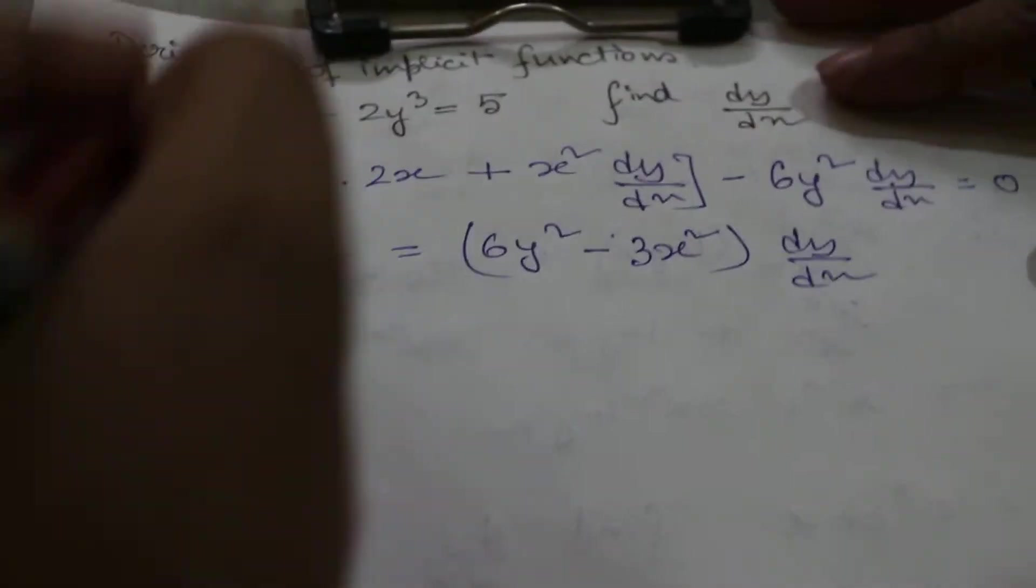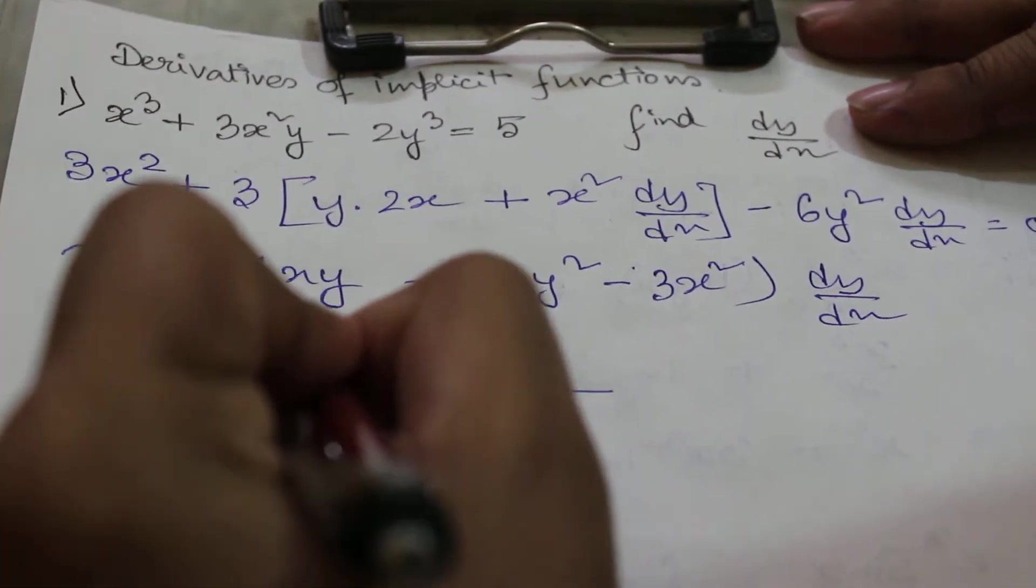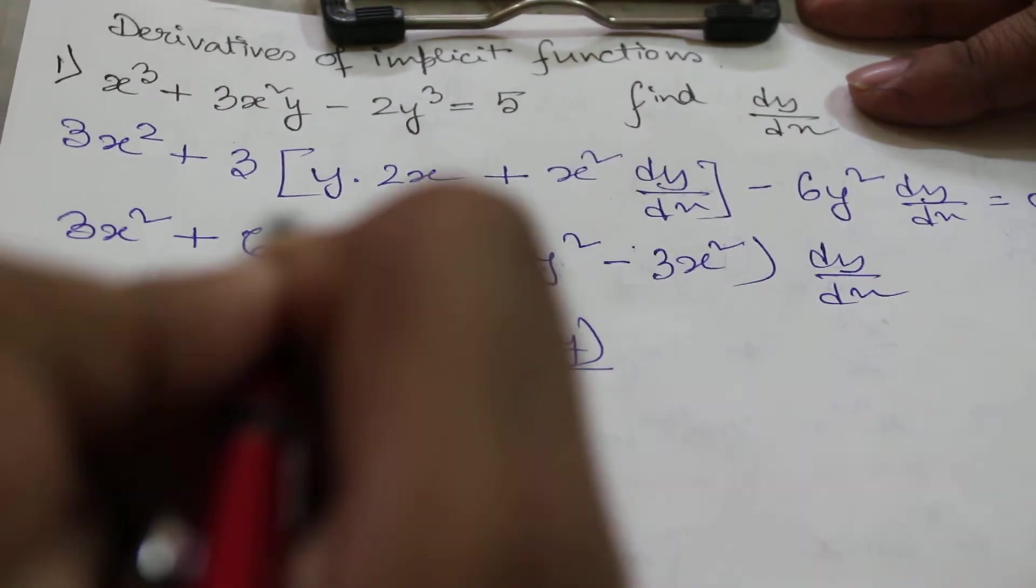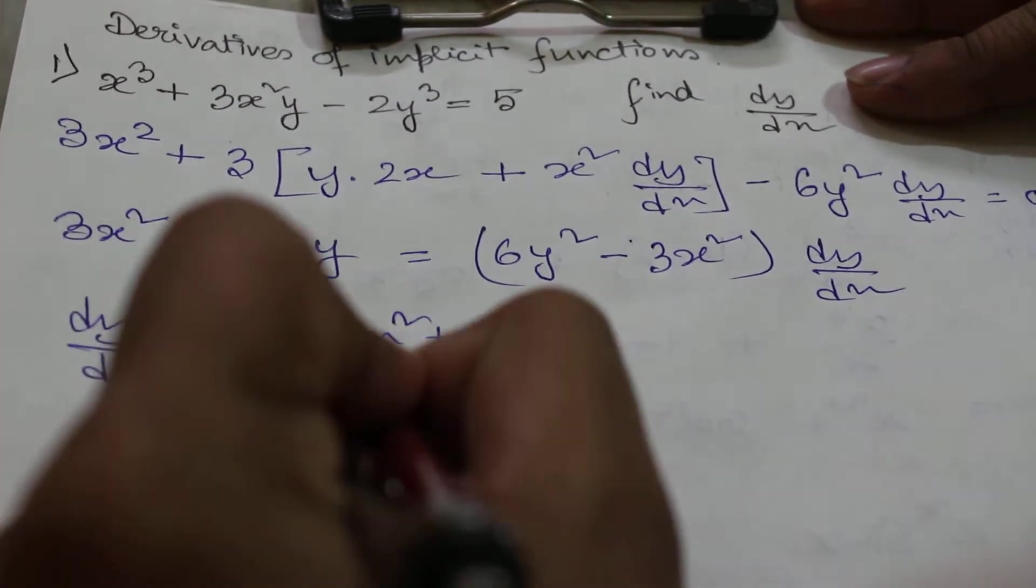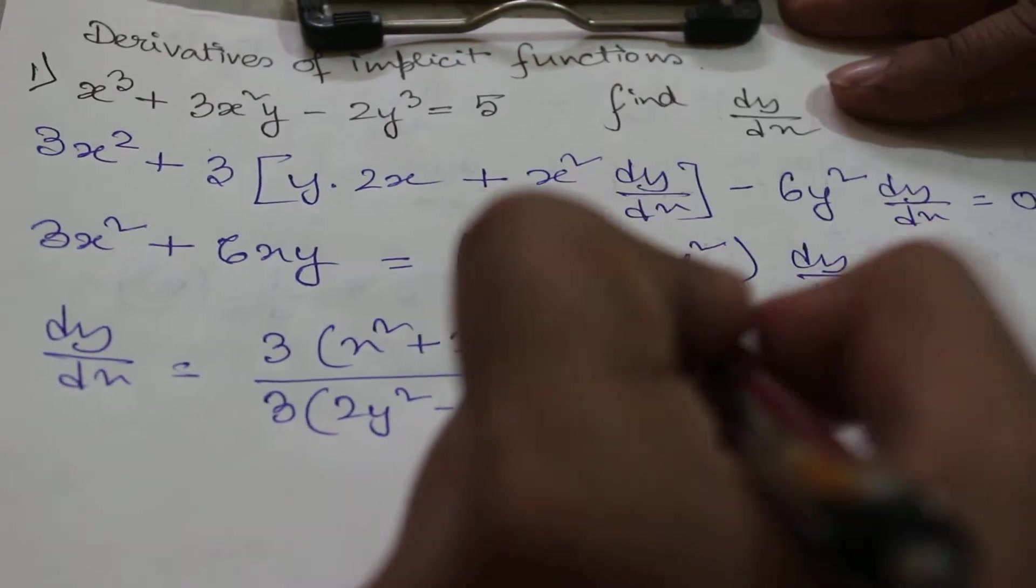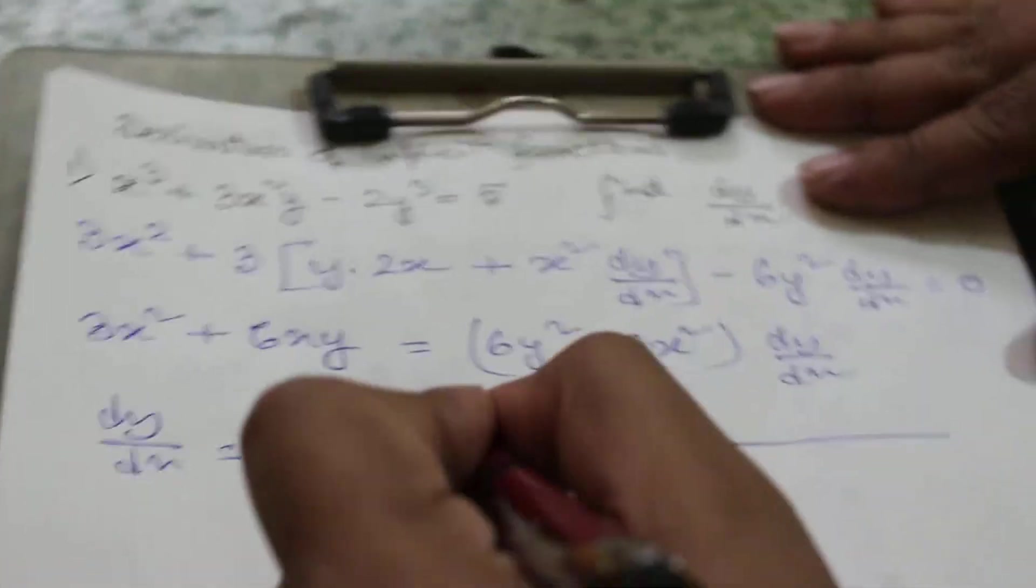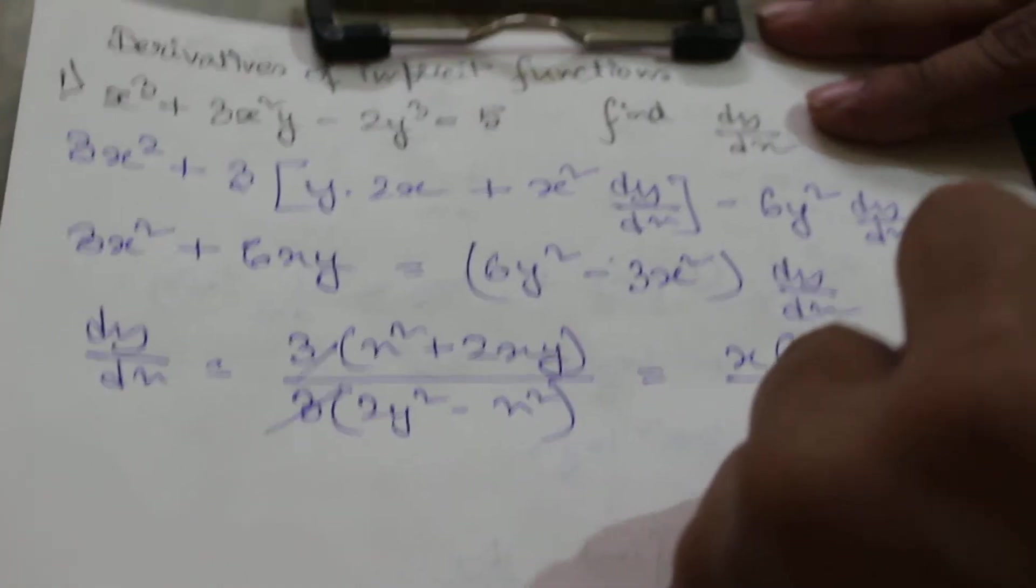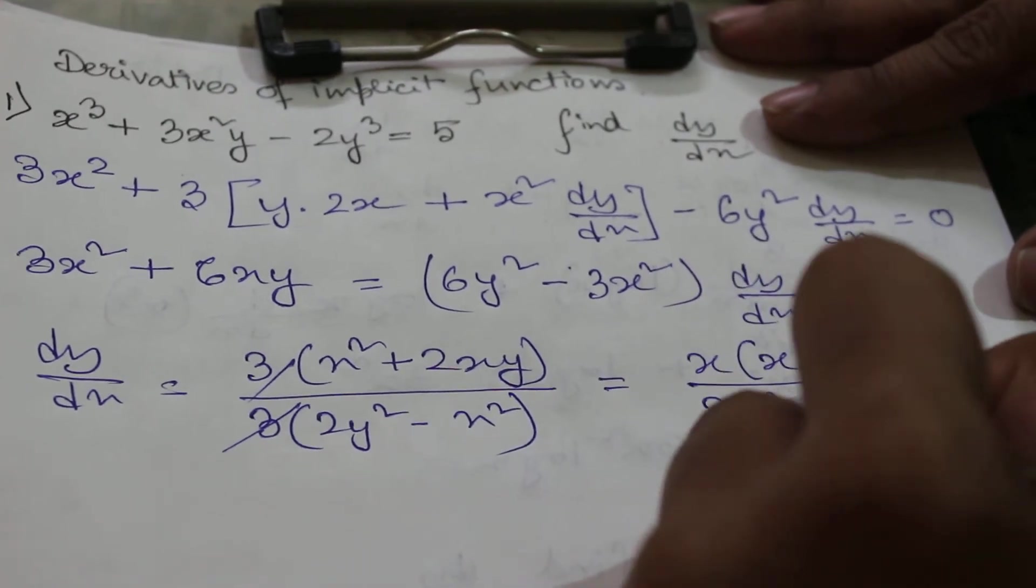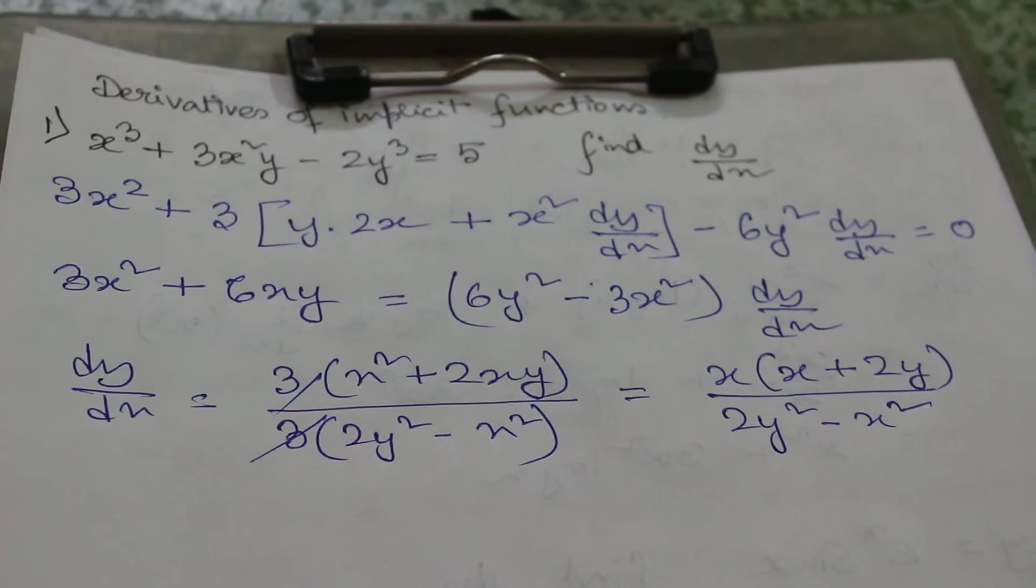So now dy/dx will be equal to (3x² + 2xy) / (2y² - x²). So if we cancel out and take common from this, it will become x(3x + 2y) / (2y² - x²). So this is the final answer. This is how we can calculate dy/dx.